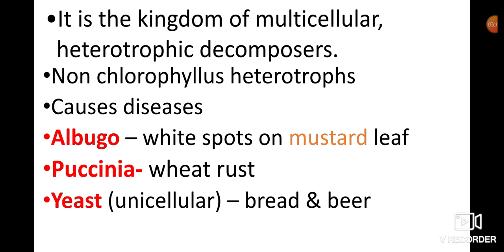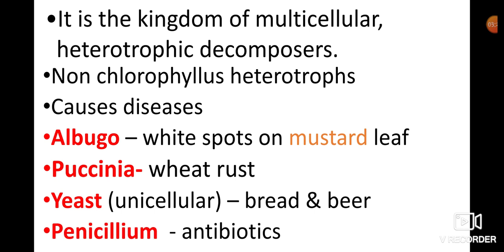Yeast is a unicellular fungus used to make bread and beer. Penicillium is a fungus used to produce antibiotics. The antibiotic penicillin was discovered from Penicillium notatum by Alexander Fleming in 1929, and for this discovery he was awarded the Nobel Prize in 1945.